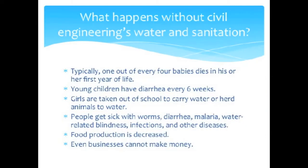What happens without water and sanitation? Typically, one out of every four babies dies in his or her first year of life. Young children have diarrhea about every six weeks, risking their lives, costing their families money for health care, and requiring that someone stay at home to nurse them. Often, young girls are taken out of school to carry water.